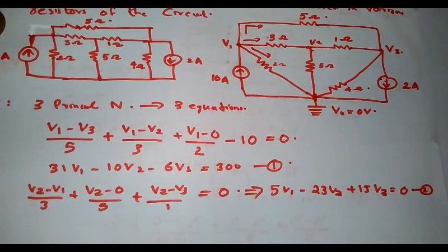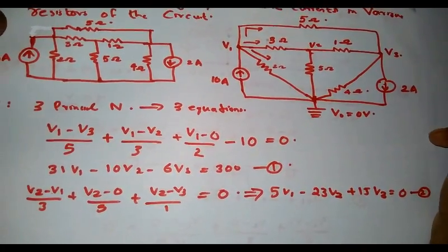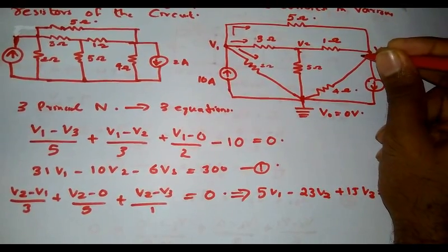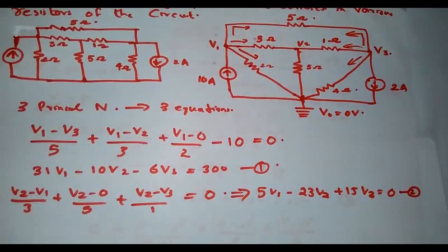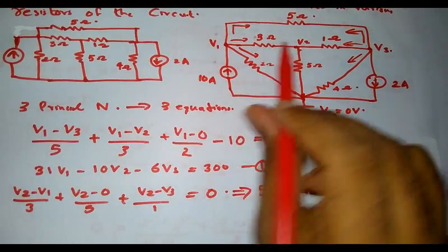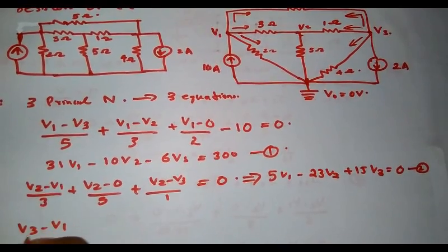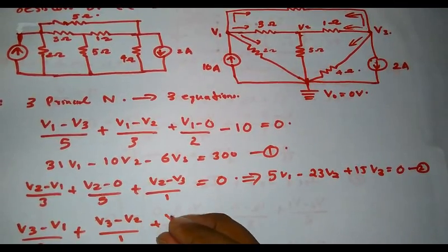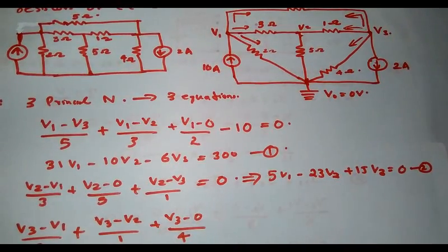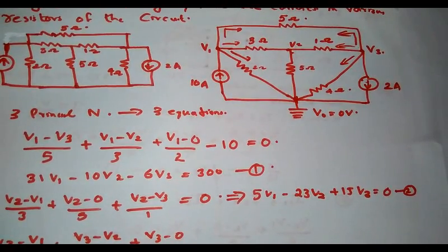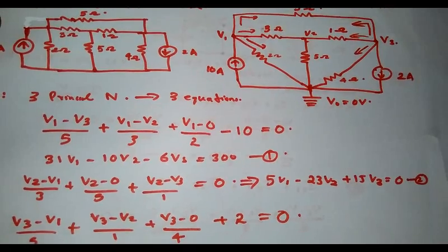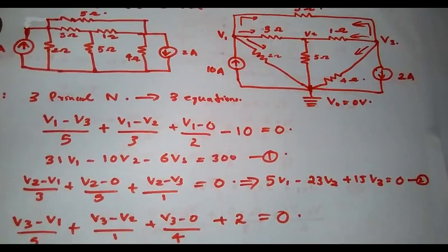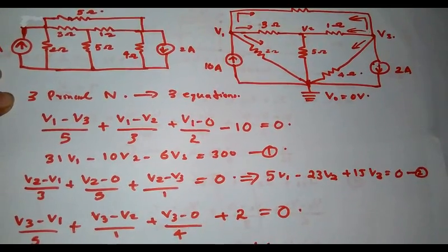Considering the third principal node V3, there are four elements connected. The four unknown currents and one known current — 2 amperes — is flowing outwards from the principal node. The current through the 5 ohm resistor is (V3 - V1)/5. The current through the 1 ohm resistor is (V3 - V2)/1. The current through the 4 ohm resistor is (V3 - 0)/4. The 2 A current source is also flowing outwards, so it is represented as plus 2 = 0. This simplifies to: 4V1 + 20V2 - 29V3 = 40.